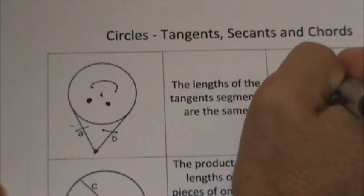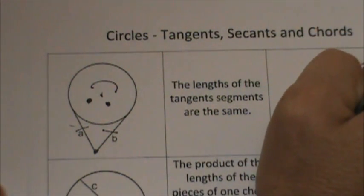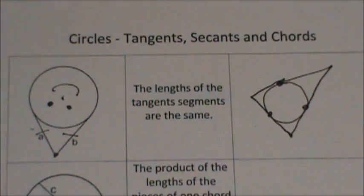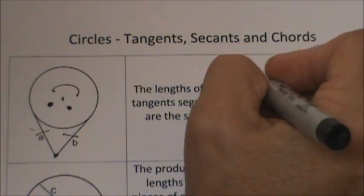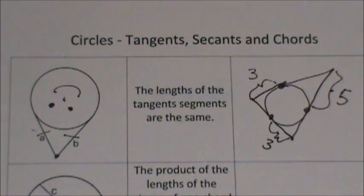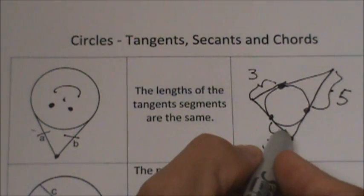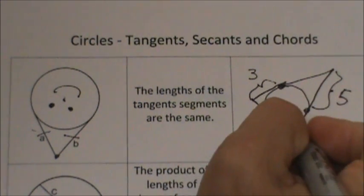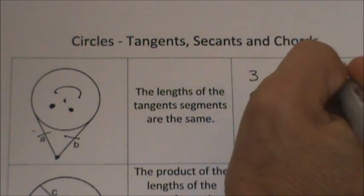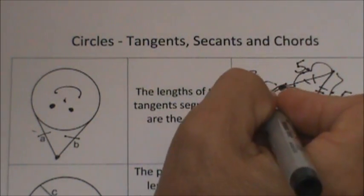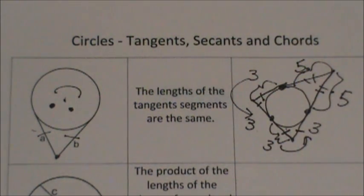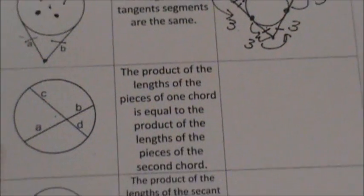If we have a triangle drawn around a circle and this segment is 3, this segment over here is 5, and this segment is 3, we can find the perimeter. Using the party hat rule, the other half of each tangent pair is equal: if one is 3, the other is also 3; if one is 5, the other is 5. We add all the sides to find the perimeter. That is the party hat rule for two tangents.